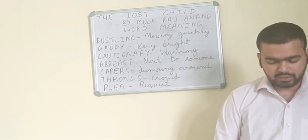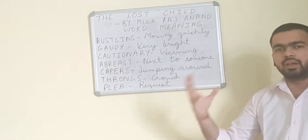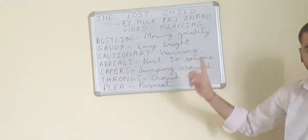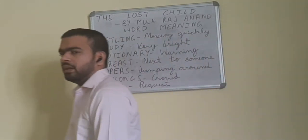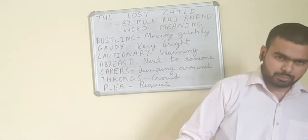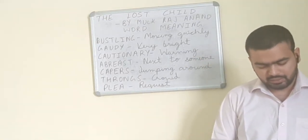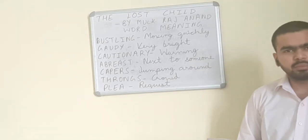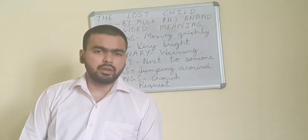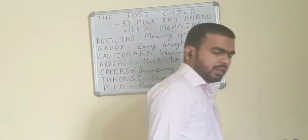'Then his mother gave a cautionary call — come child, come on to the footpath.' Cautionary means a warning call. His mother gave him a warning to come to the footpath, otherwise he would get separated. 'He ran towards his parents and walked abreast of them.' Abreast means next to someone — he walked alongside them.